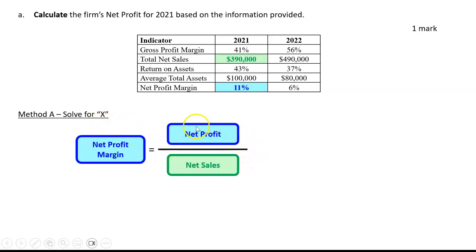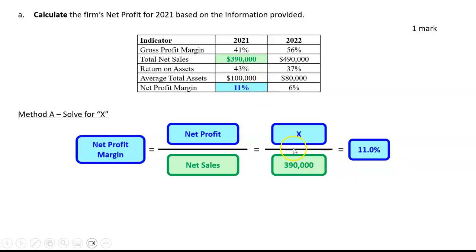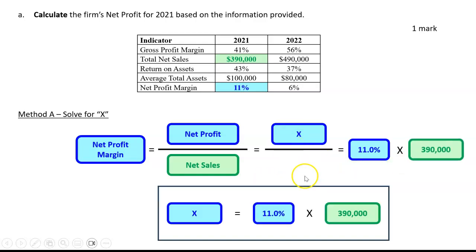One way to do that is to solve for X. You would need to know that net profit margin is net profit divided by net sales. In this case, the net profit figure is what we don't know, so let's call that X. X divided by net sales of $390,000 results in 11%. We can rearrange to find that X must be 11% times $390,000, which is $42,900.